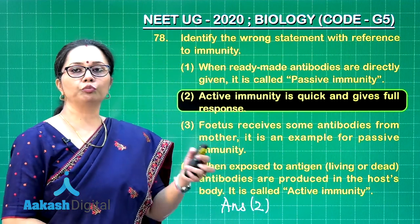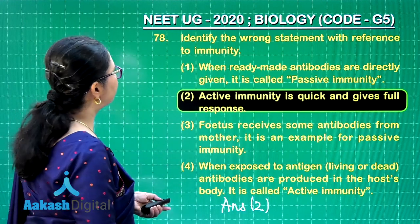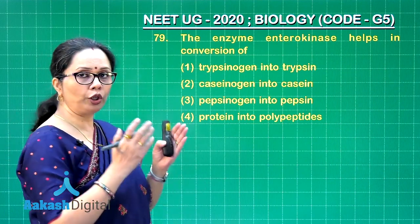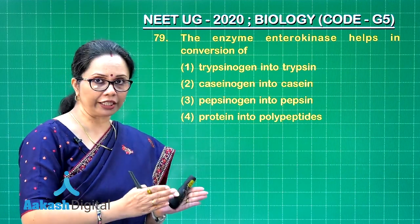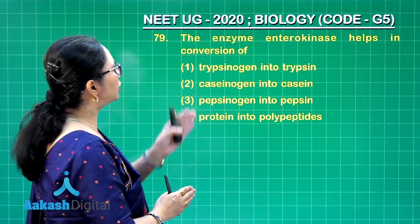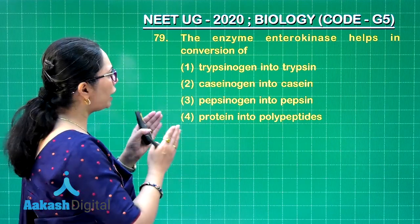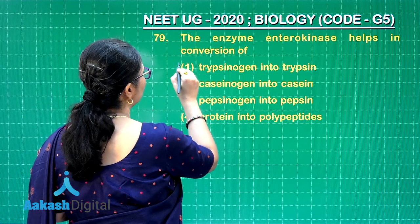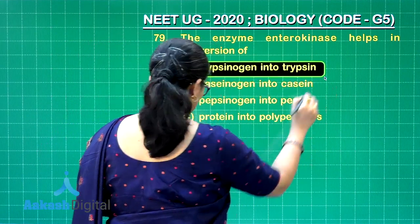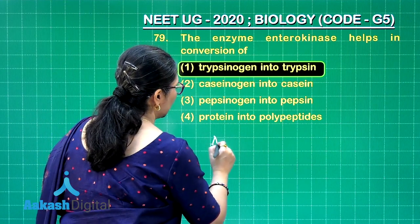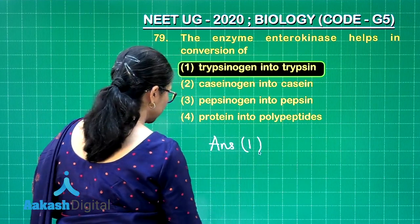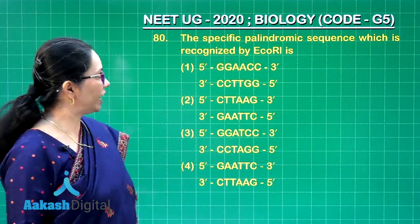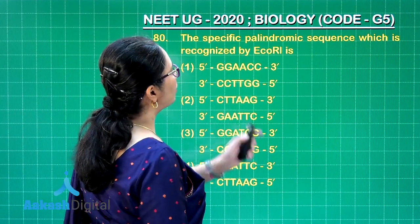Question 79: the enzyme enterokinase is present in succus entericus, that is the intestinal juice. This is a direct question — enterokinase converts one of the pancreatic enzymes, trypsinogen, to its active form, trypsin. So option 1 is the correct answer.